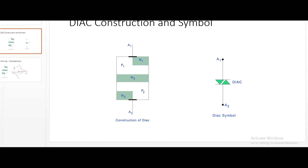This is a DIAC construction and symbol. DIAC stands for DI referring to diode and AC referring to alternating current. If you can see DIAC here, you can see A1 and A2 terminals. This is the construction and this is the symbol. DIAC is nothing but two diodes connected in parallel with anode terminals on either of the ends. It is also a semiconductor device, just like NPN and PNP transistors.